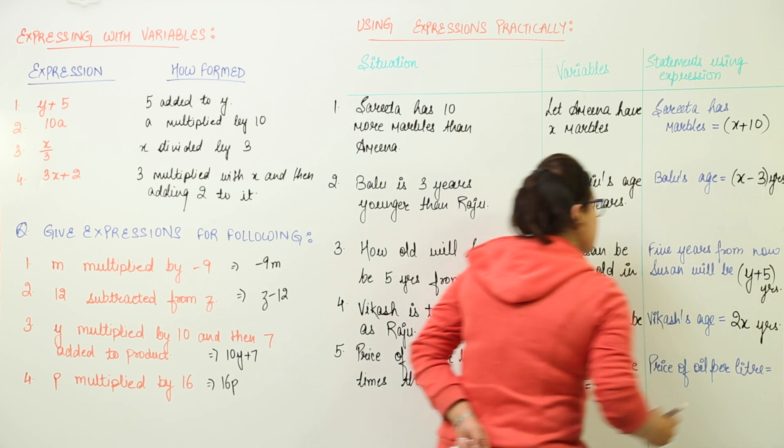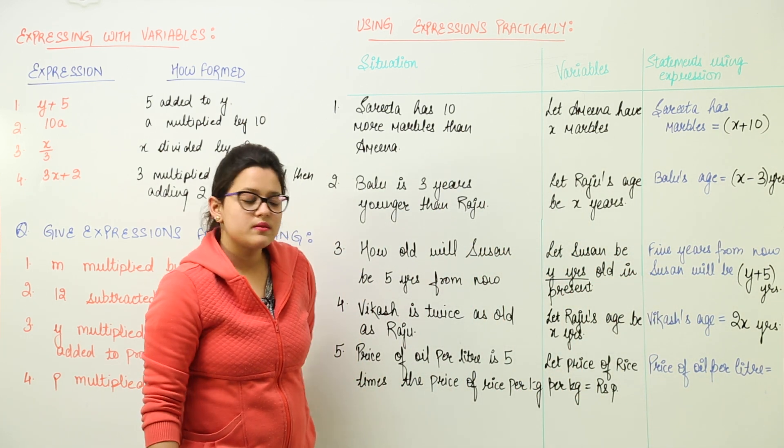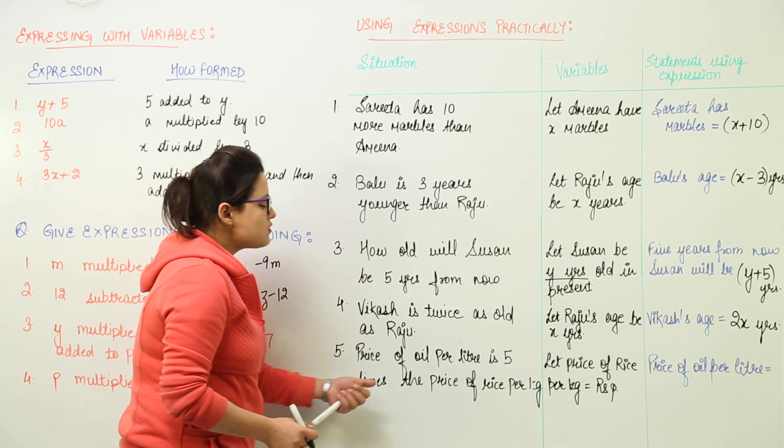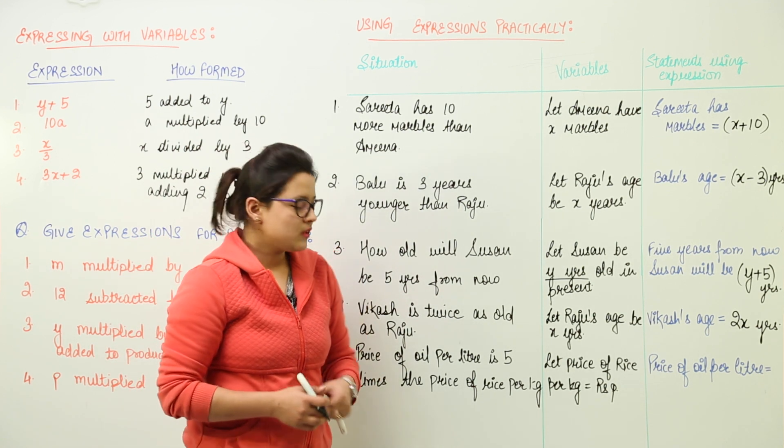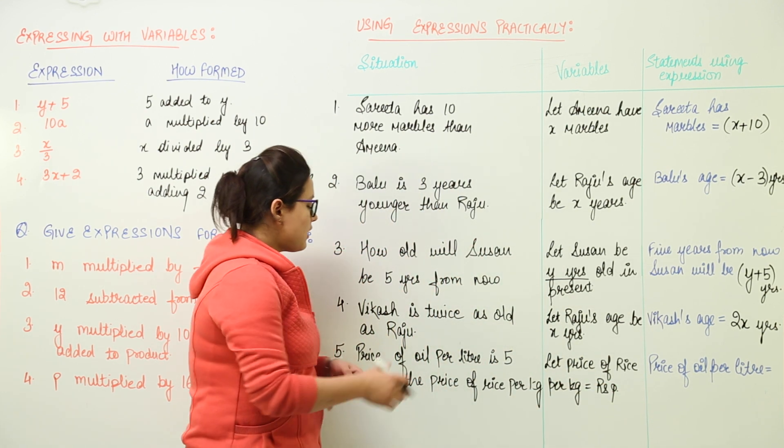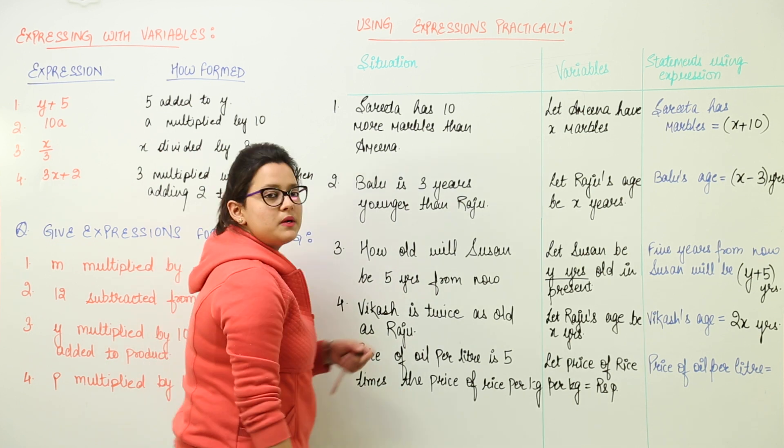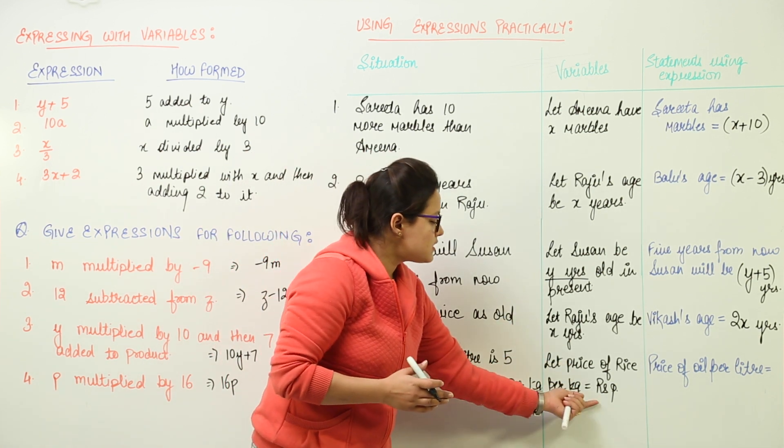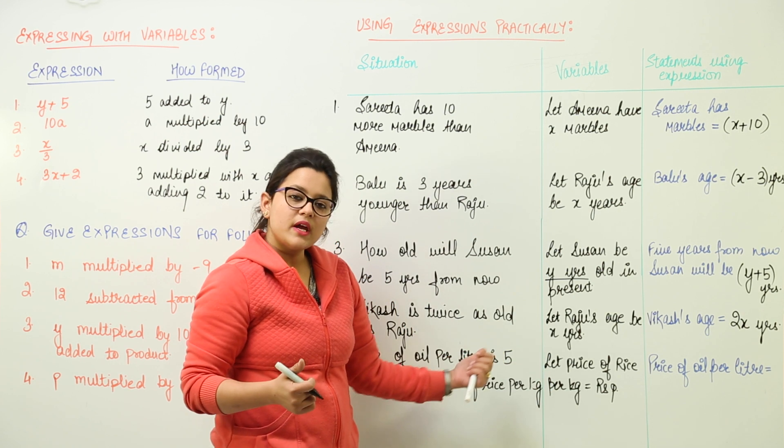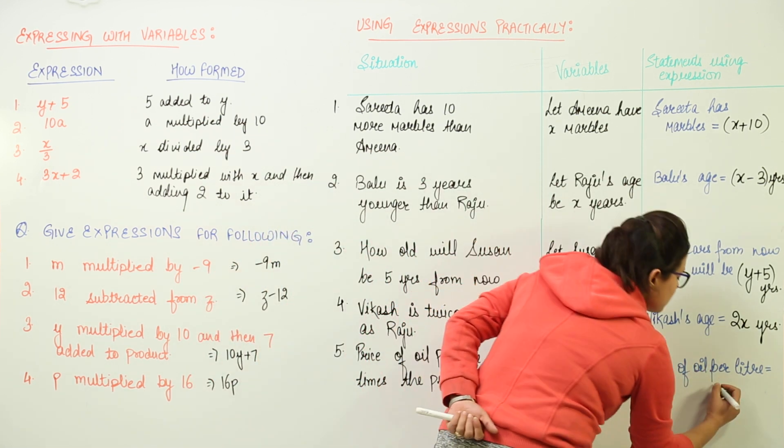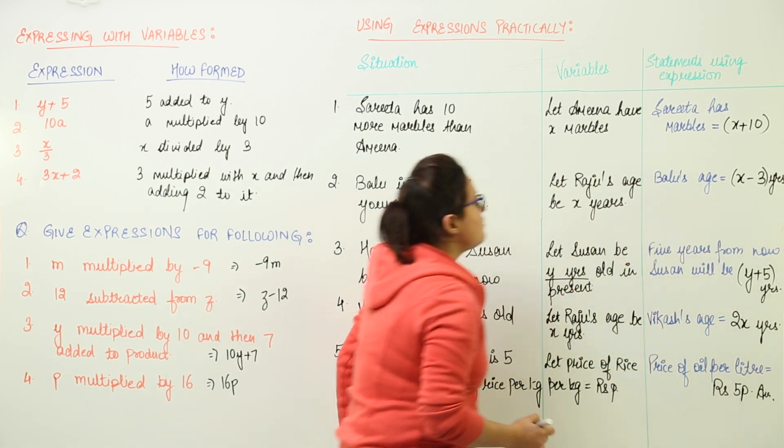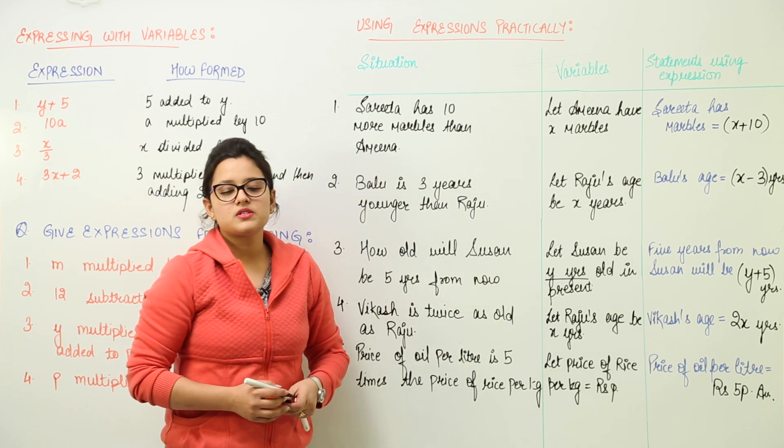The last is that price of oil per litre is 5 times the price of rice per kg. So we assume the price of rice per kg to be rupees P. Now the price of oil per litre is 5 times this price. So if the rice per kg is rupees P, 5 times rupees P would give us rupees 5P. So we can even use the variables for practical situations like these.